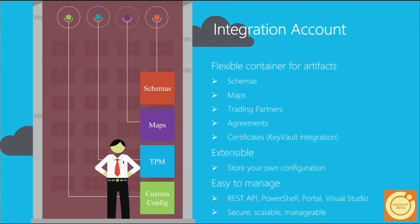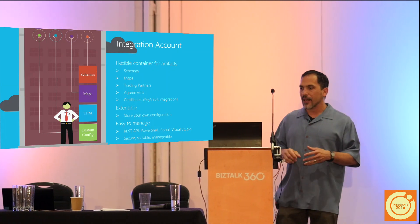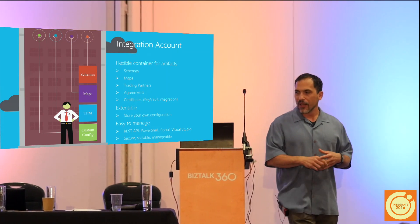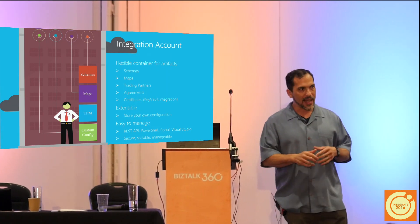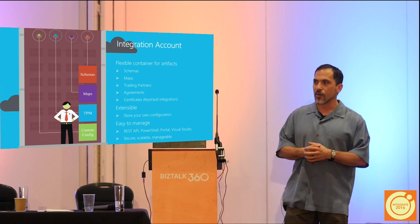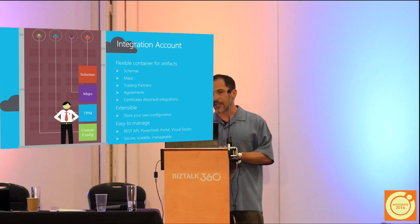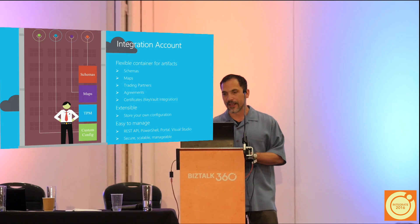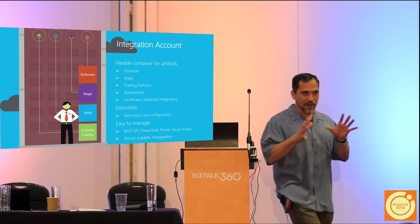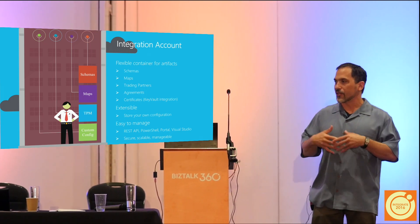The integration account is a flexible container for enterprise artifacts. That includes your XML schemas, maps, XSLTs, trading partners, agreements, and the certificates needed for B2B interactions across EDI with AS2. That container for artifacts is acting as our vertical.